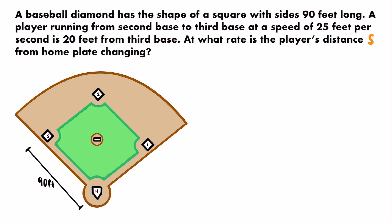We have a player running from second base to third base. Specifically, they are running at a speed of 25 feet per second. When they have that speed, they are at a specific distance of 20 feet from third base. I'm going to draw a baseball player here who is running toward third base, and label that distance of 20 feet.